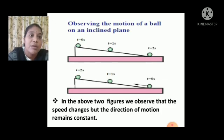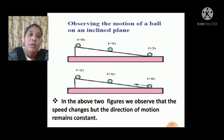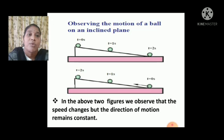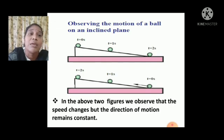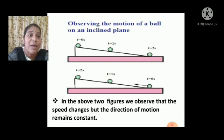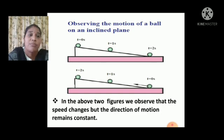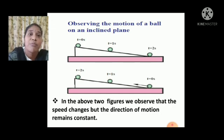In another picture, I am throwing a ball in the upward direction — here also the distances change but the direction is not changing. In both figures, what happens is that speed changes: from 0 to 2 seconds speed gradually decreases because the Earth's gravitational force has attracted the ball, but the direction of motion does not change — it remains constant.